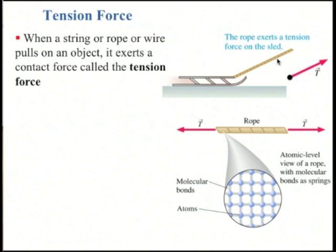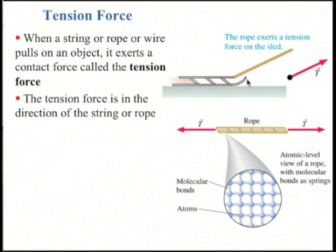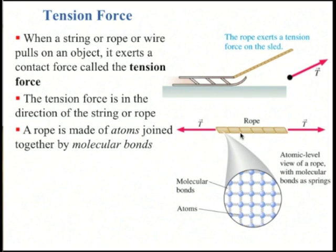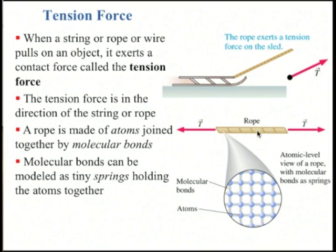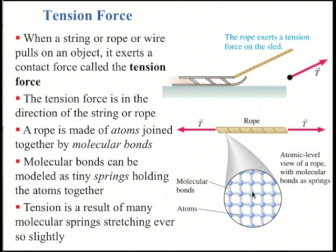Tension: whenever a string, rope, or wire pulls an object, it exerts a contact force called tension. Here's a sled with a rope attached to it. We draw the force vector tension as being up and towards the right — it's in the direction of the string or rope. The microscopic mechanism behind tension is like a spring force. The rope is made of many small atoms connected by the electric force, which can be modeled as tiny springs. If there's a force on the rope, all these little horizontal springs are stretched slightly, and that stretching is what causes the rope to have tension.